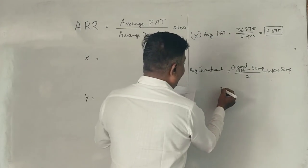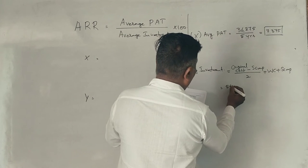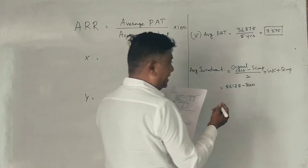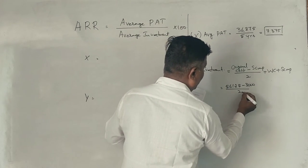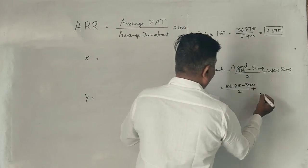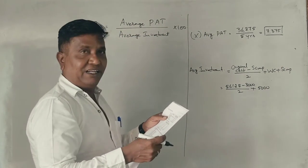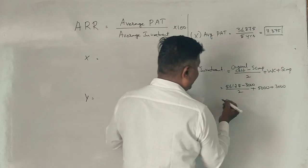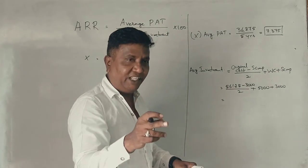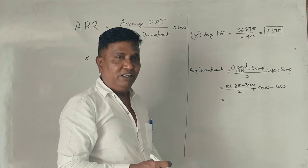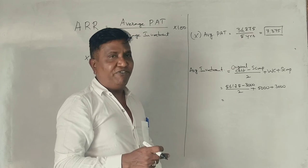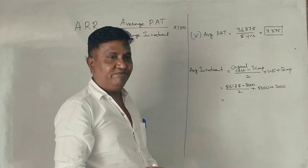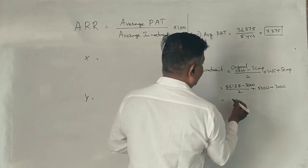So the original cost is $56,125. The scrap value is $3,000. The salvage is the scrap. So $56,125 minus $3,000 divided by 2, plus $8,000. 5 plus 3 is plus 8,000. So $34,562.50.